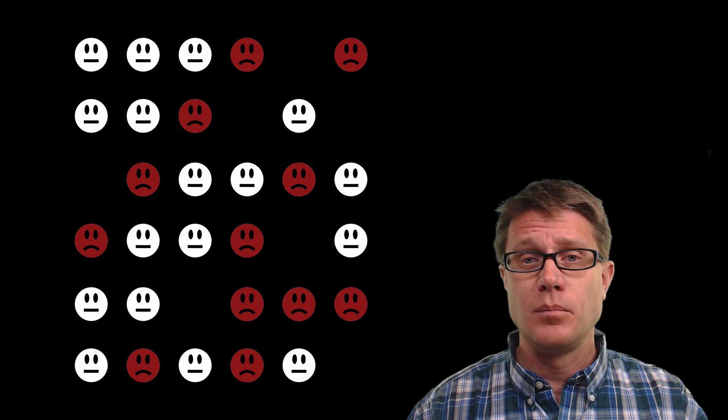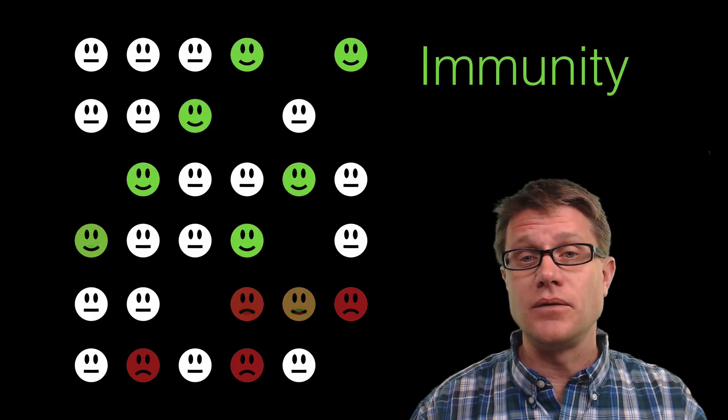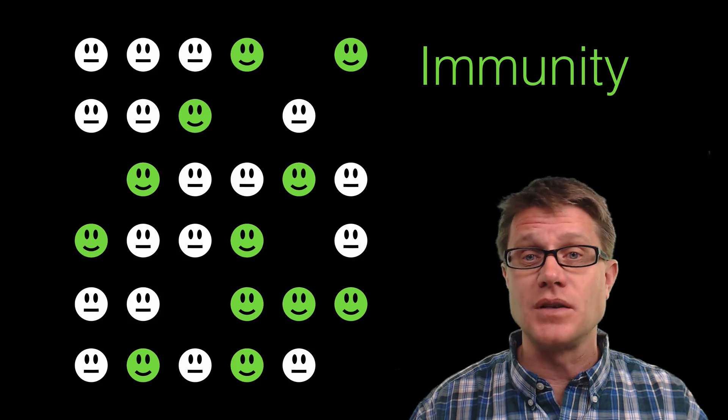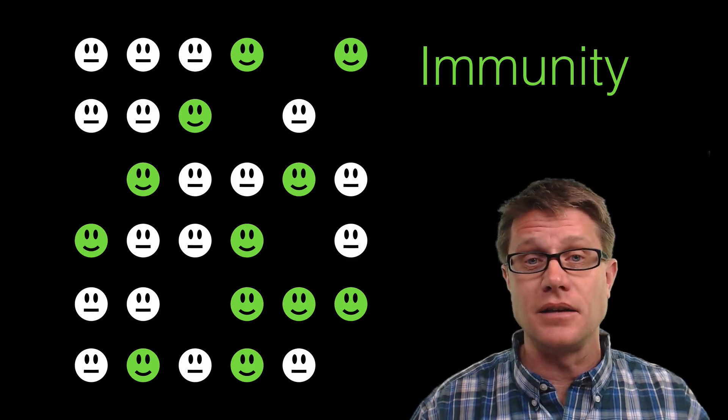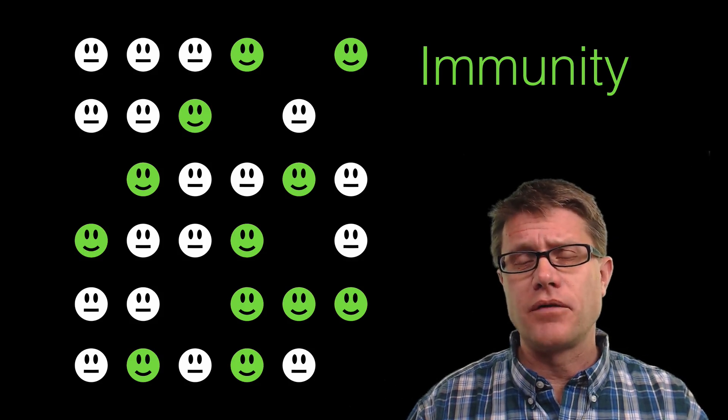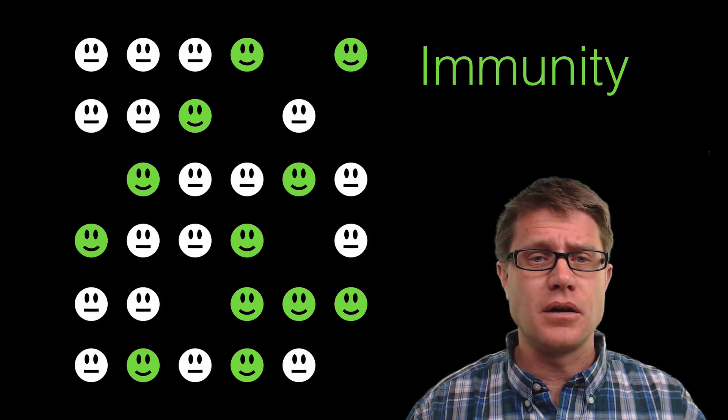And so what happens after you get a disease? Well you get sick. And in some diseases you might even die. But if you know anything about animals we can gain immunity to that disease. Once we have got the disease we are not going to get the same disease again unless it mutates highly. And so what these people with immunity do is they offer protection to everyone else within the herd.